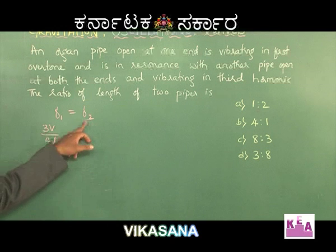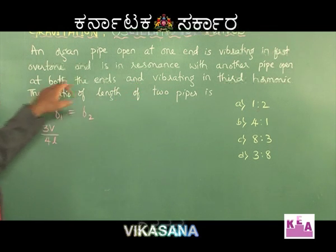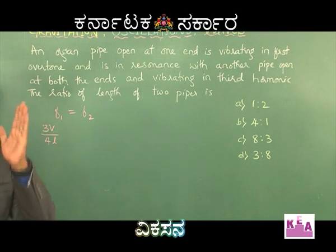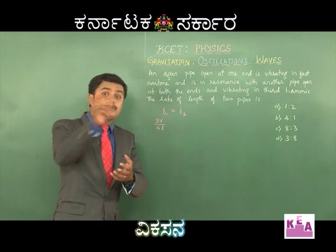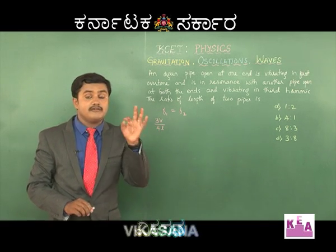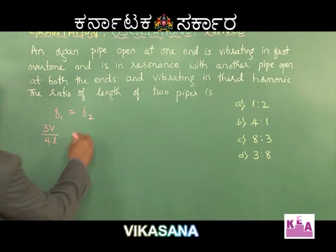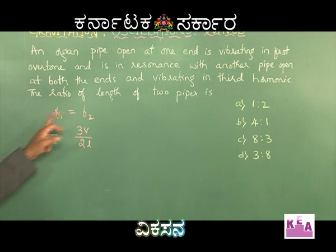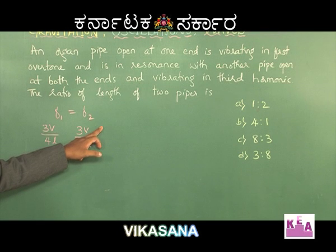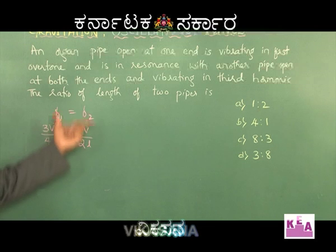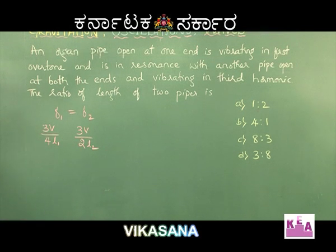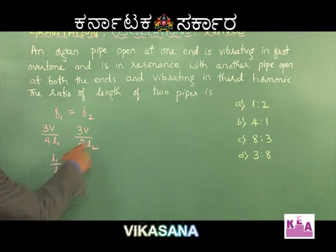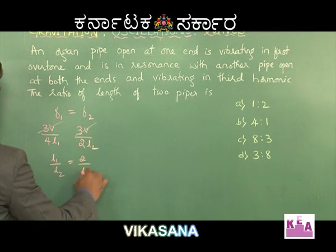Now the second frequency has to be taken from the open pipe. Which harmonic should I consider? The other pipe is open at both ends and vibrating in the third harmonic. F1:F2:F3 = V/2L : 2V/2L : 3V/2L. So the third harmonic from the open pipe is 3V/2L. Setting F1 equal to F2: 3V/4L1 = 3V/2L2. The 3V cancels since V is the same for both. I want L1/L2, which equals 2/4 = 1/2.